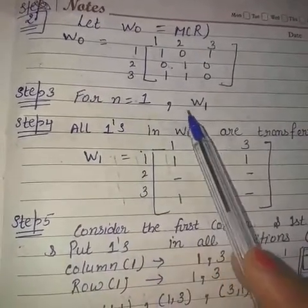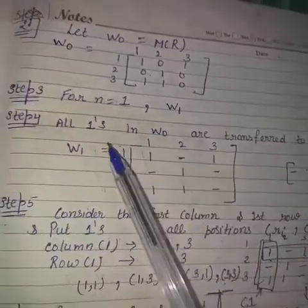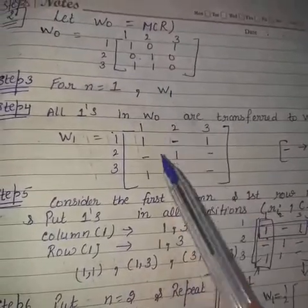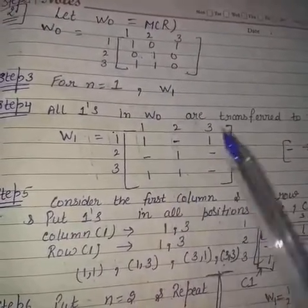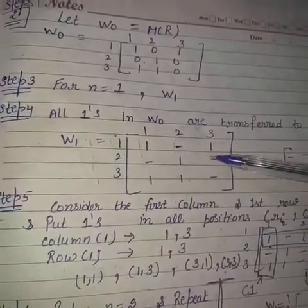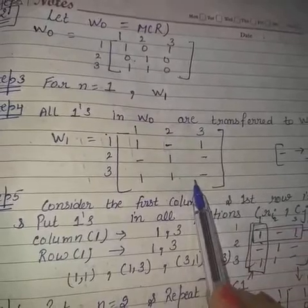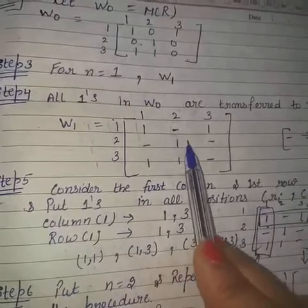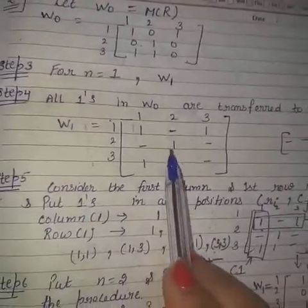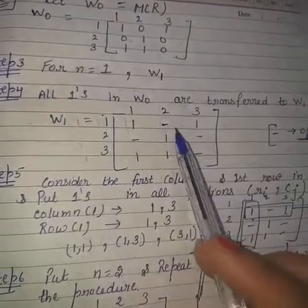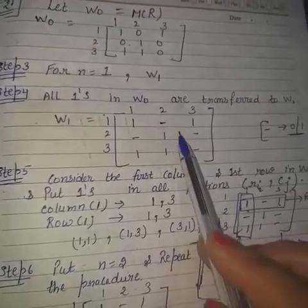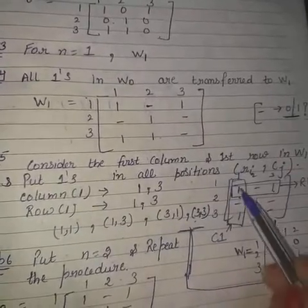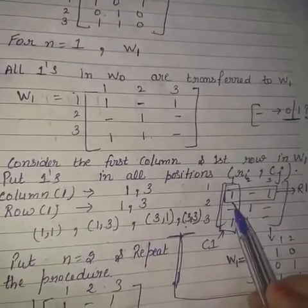The third step is: for n=1, we need to create the next matrix W1. First, all the ones that are in W0 are written as-is into W1. The positions that are 0 in W0 are left blank in W1 for now — those blanks can become either 0 or 1. We need to find those values. The blank positions are where we check whether any new relation exists or not.